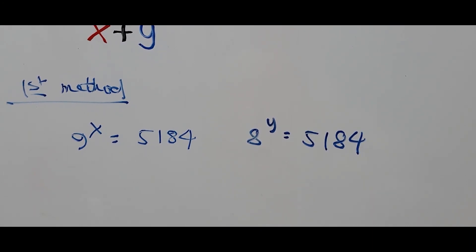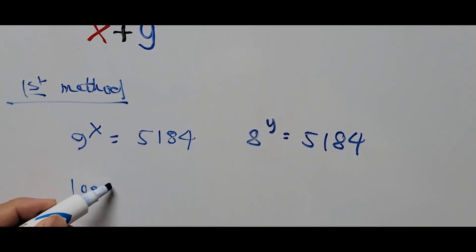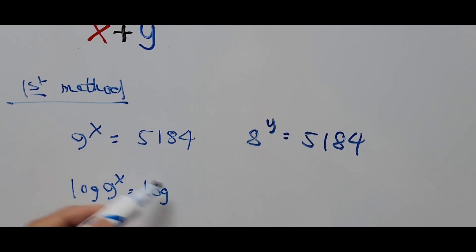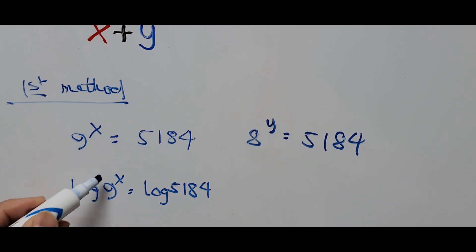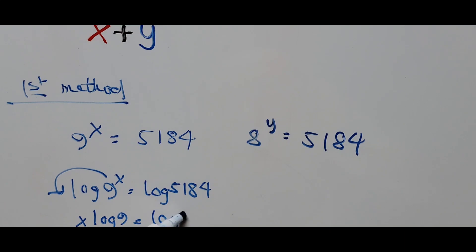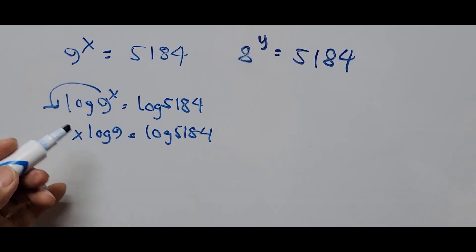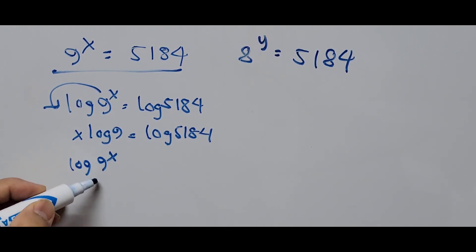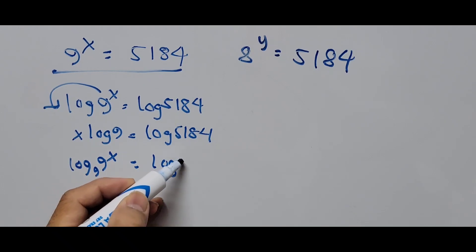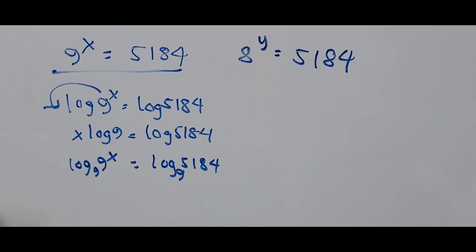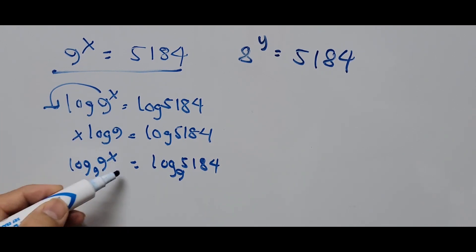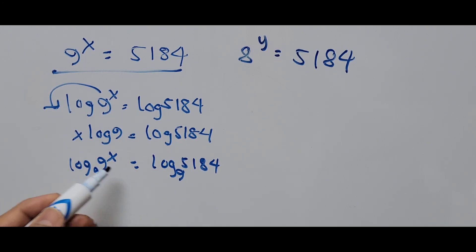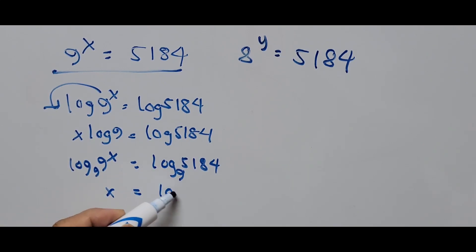For the first equation, we take the log of 9 to the power of x equal to log of 5184. Bringing x down as the coefficient gives x·log(9) = log(5184). Using the change of base formula, log base 9 of 9 equals 1, so this simplifies to x = log of 5184 base 9. That's the value of x.